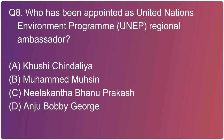Moving to the eighth question: who has been appointed as the UNEP regional ambassador? It is option A - Kushi Chindalia. Kushi Chindalia, a 17-year-old girl, has been appointed as the regional ambassador for India by UNEP's Tunza Eco Generation. She will raise awareness about climate change, the importance of environment conservation, and the need to safeguard environmental treasures.